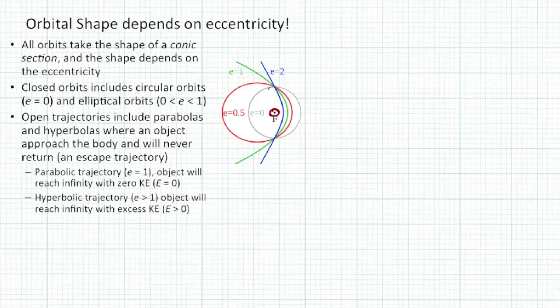Most objects don't orbit in perfect circles. This red ellipse has an eccentricity of 0.5, and its other focus would be over here somewhere. Then we have this green orbit with an eccentricity of 1, and this blue orbit has an eccentricity of 2. All these will make objects orbit the sun differently.